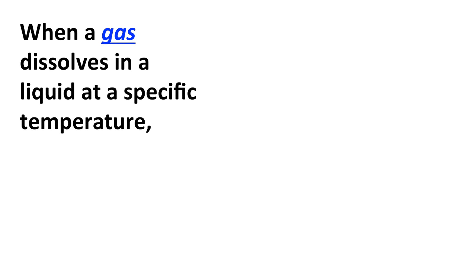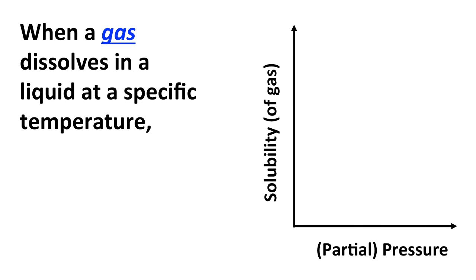What happens when a gas dissolves in a liquid? If we have a particular gas — let's say oxygen — and it dissolves in a specific liquid — let's say water — and we're at a particular temperature, let's say 25 degrees Celsius, what we find is that the solubility of that gas in the liquid depends upon the partial pressure of the gas above the liquid.